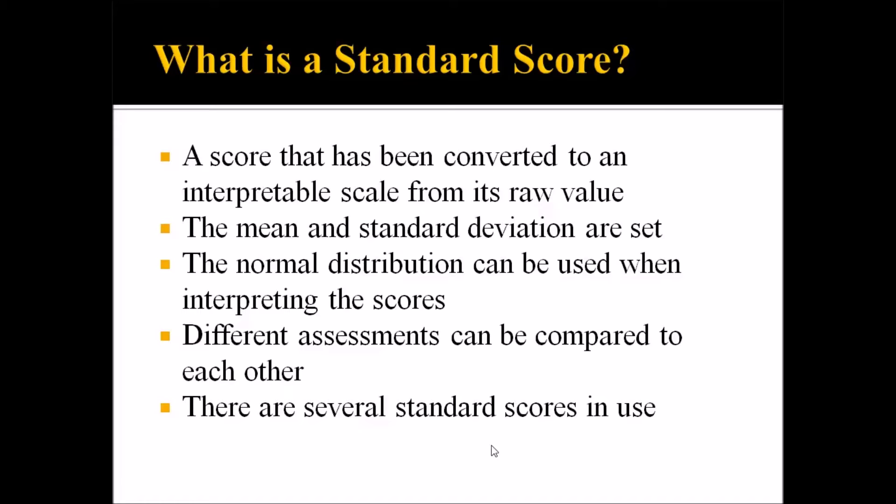Well, it's a score that has been converted to an interpretable scale from its raw value. So when we assess a client using an instrument, we get a raw score. For example, if they have 50 responses and they endorse 33 of those responses, that raw score might be 33. Well, that raw score just by itself doesn't really tell us anything. But there are ways to convert that into an interpretable scale. And that interpretable scale is a standard score, and therefore the score would take on some meaning.